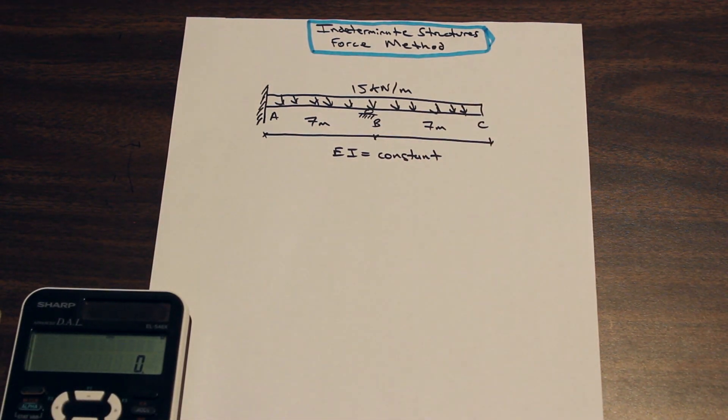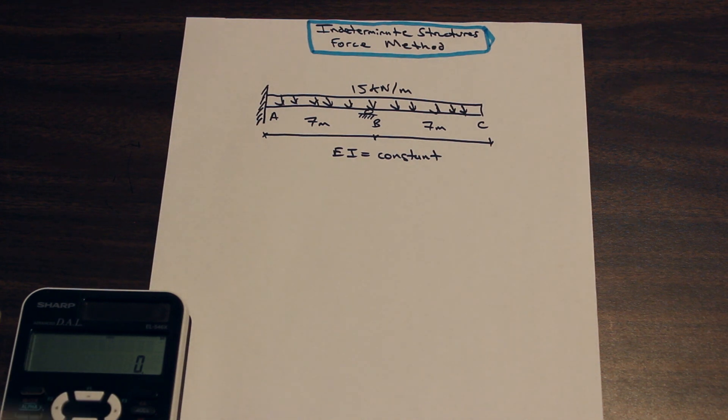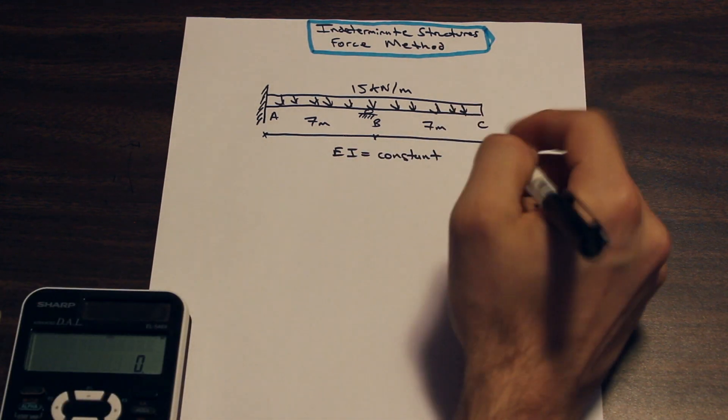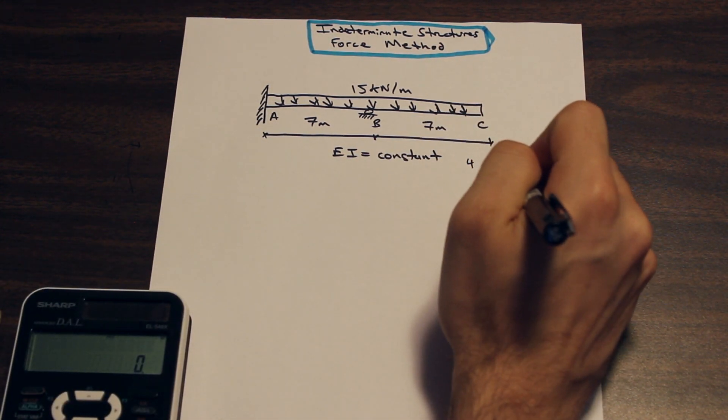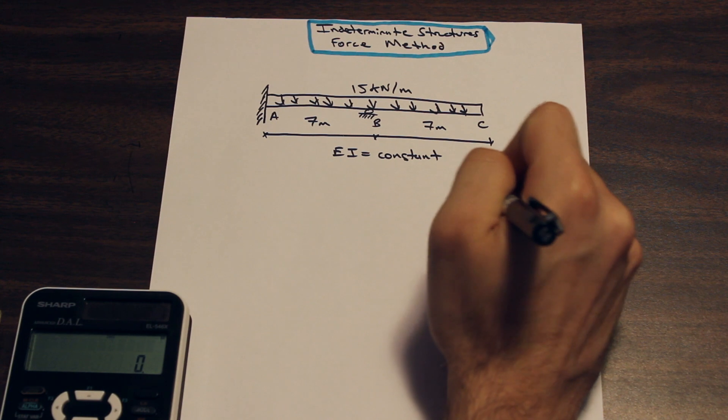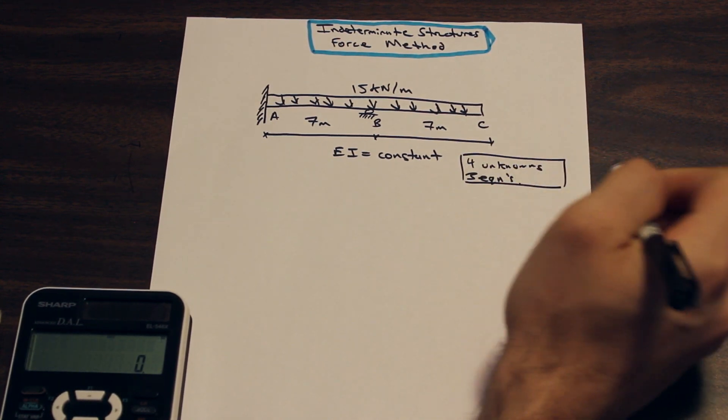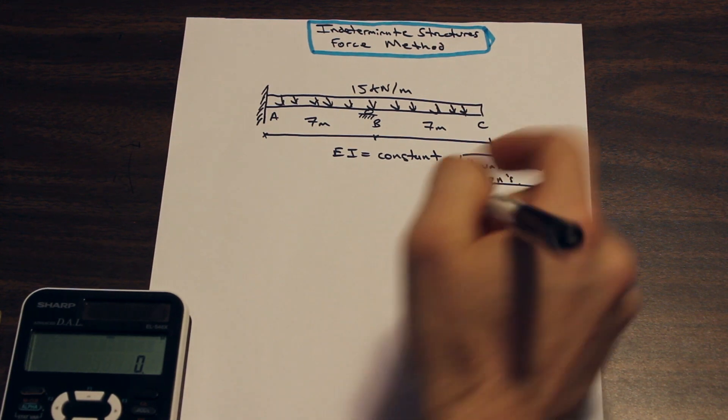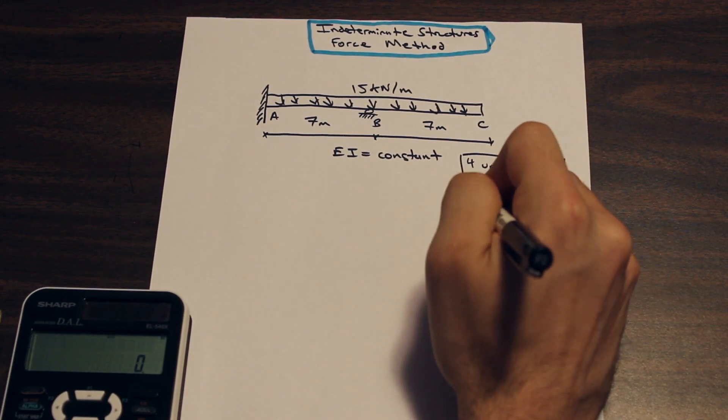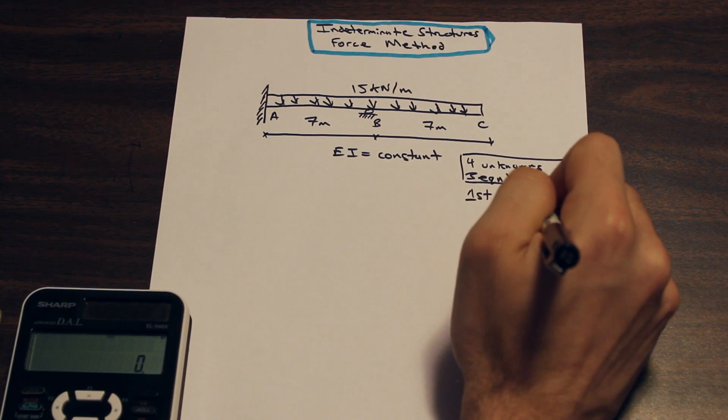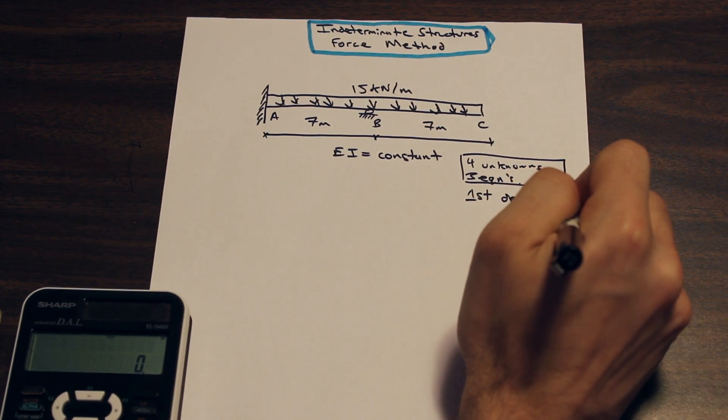What we're going to do with this problem is we're going to use the force method. So in the case where we only have one more reaction or one more reaction than we have equations, we have one more unknown. So we have four unknowns and only three equations.